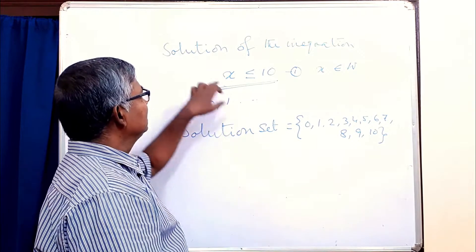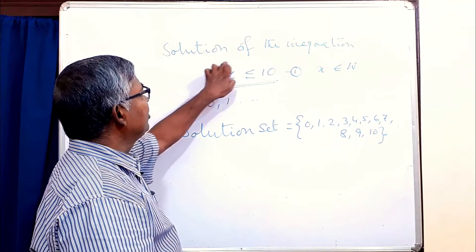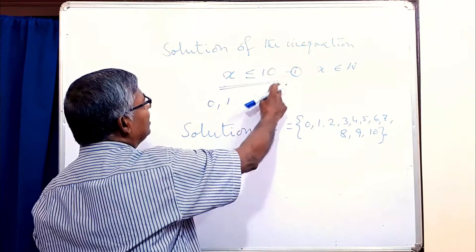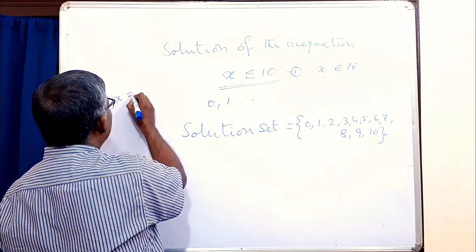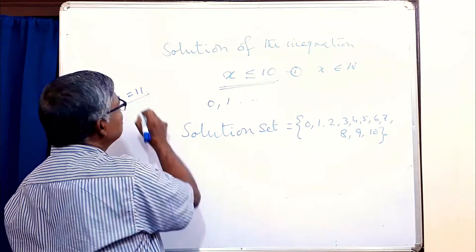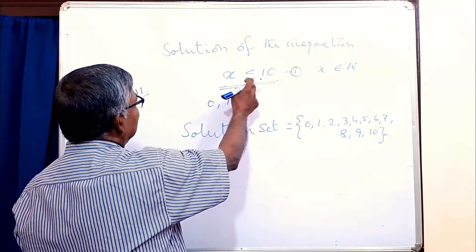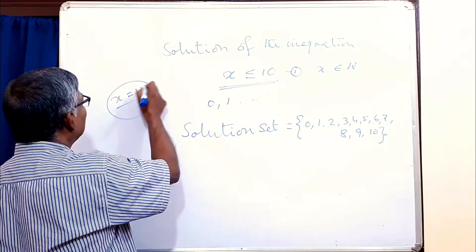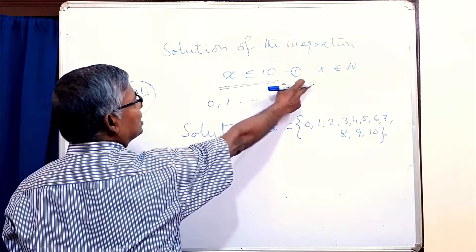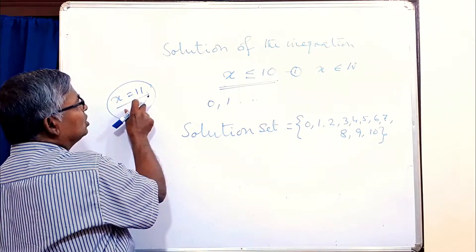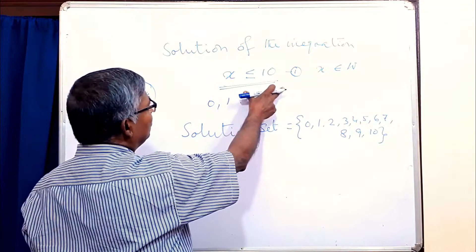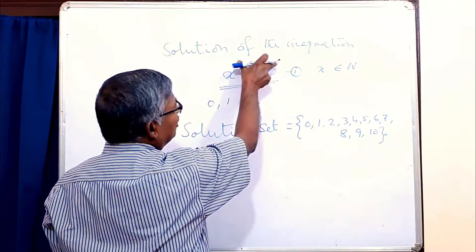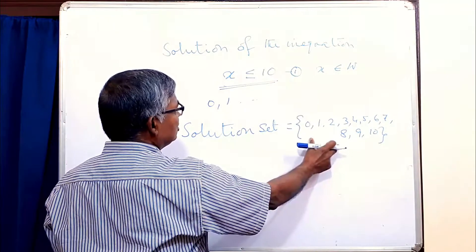Whether a number is a solution of the inequation or not, simply just put the value and check whether the given condition is satisfied or not. Suppose you take the value x equal to 11 — you see x is not less than or equal to 10, so it can never be the solution of this inequation. That is, for this value it is not true. So only these values satisfy the inequation, hence it is called the solution set.